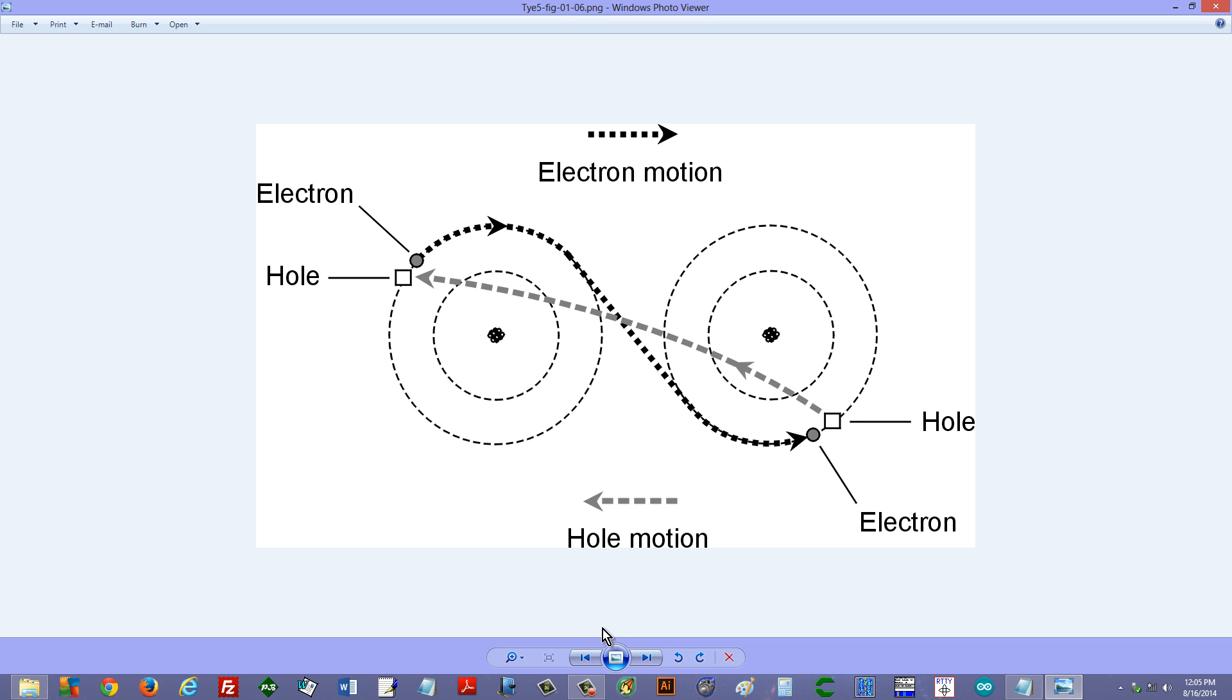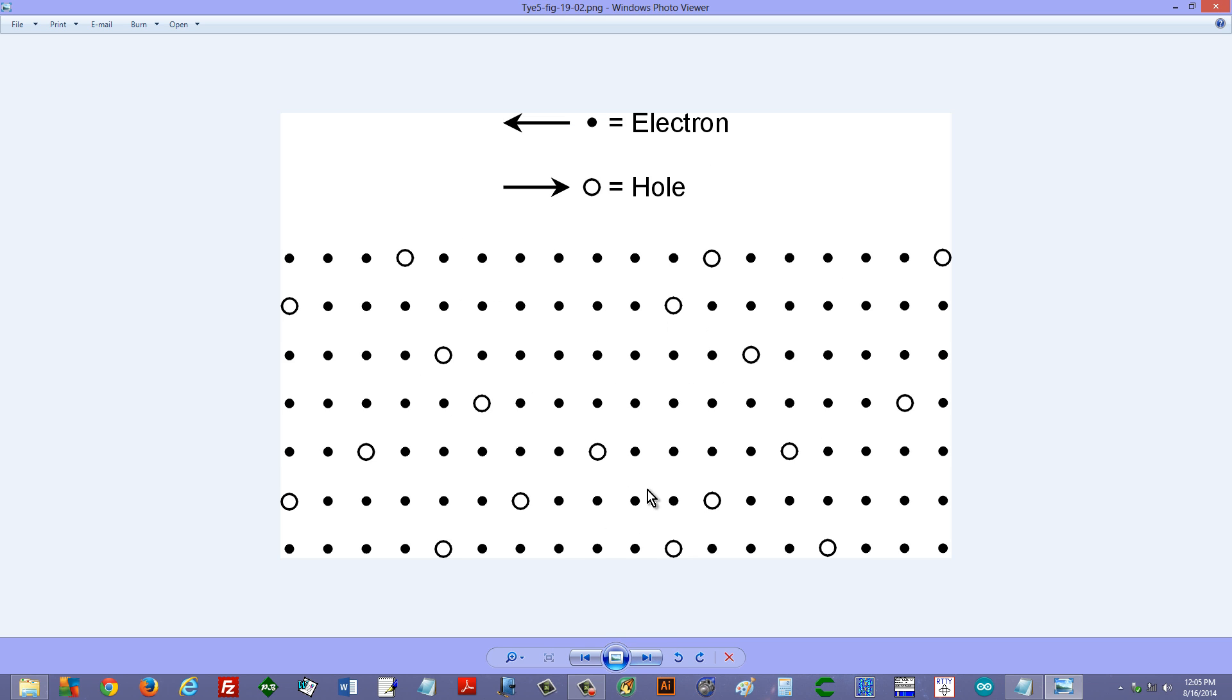Here's another picture of electron versus hole movement. These black dots are individual atoms. Pardon me, these black dots represent electrons, and the circles represent holes. As the electrons move from right to left, the holes, or electron absences, however many of them there are, move in the opposite direction, from plus to minus.